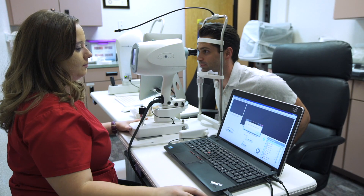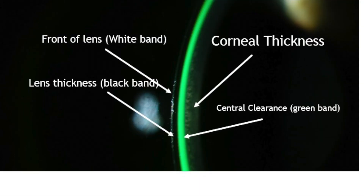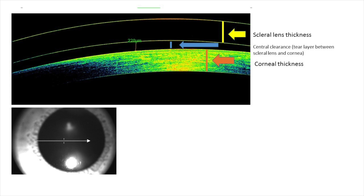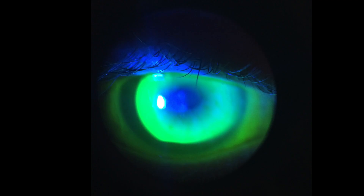After confirming there are no bubbles, evaluate the fluid layer between the posterior portion of the scleral lens and the anterior portion of the cornea. This area has names such as fluid reservoir, fluid layer, posterior tear lens, and clearance. Check the central clearance of the lens. If there are any areas of touch, remove the lens and select one with a larger sagittal depth. Also evaluate the mid-peripheral and limbal fit to ensure appropriate clearance is achieved.